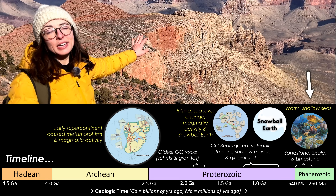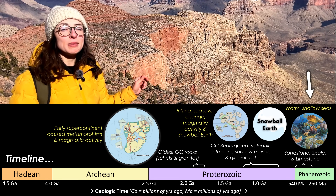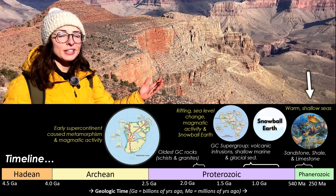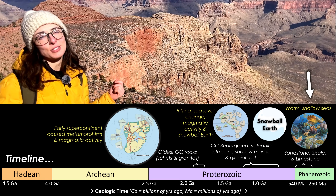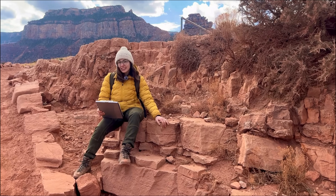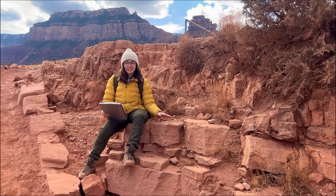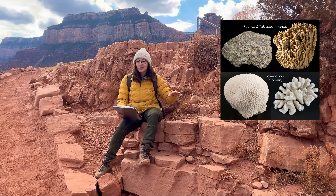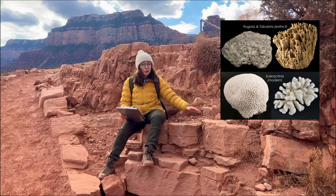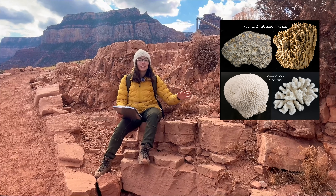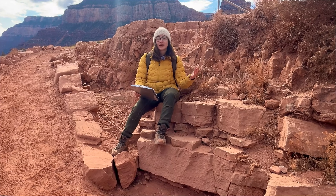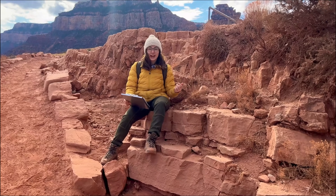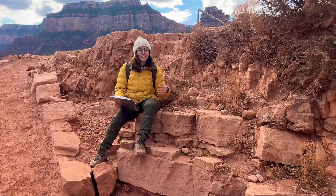This limestone was deposited in a warm tropical marine environment in the Mississippian period, around 360 to 320 million years ago. Globally, this was a time of high sea levels and extensive reef ecosystems. But the reefs back then were completely different than those today — the corals that built reefs then went extinct at the end of the Paleozoic, so the corals we have today are a completely different group. Other organisms like sponges, cyanobacterial mats, and algae contributed more heavily to reef building. Around this time, plants had just spread onto land, and early amphibians were evolving from lobed-finned fish.